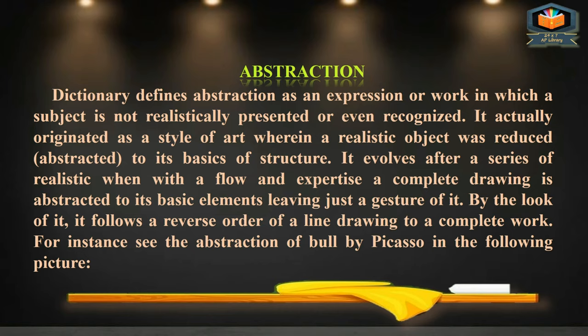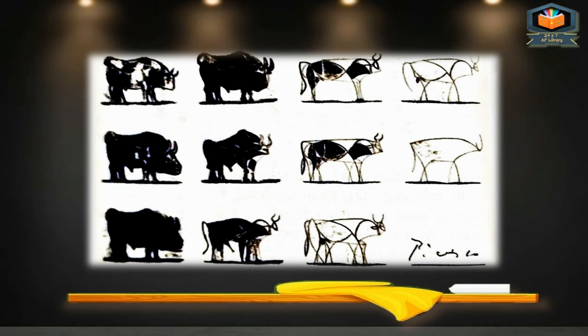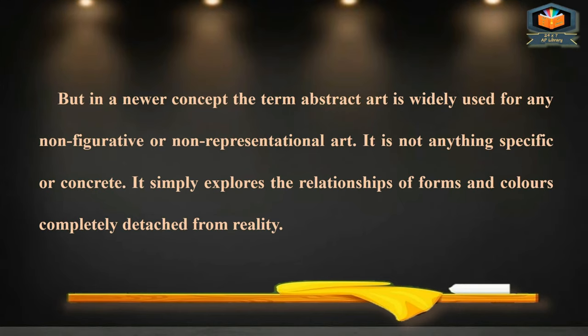By the look of it, abstraction follows a reverse order — from a complete work down to a line drawing. For instance, see the abstraction of a bull by Picasso in the following picture. Abstraction is an artificial way of presentation. In a newer concept, the term abstract art is widely used for any non-figurative or non-representational art — it is not anything specific or concrete.